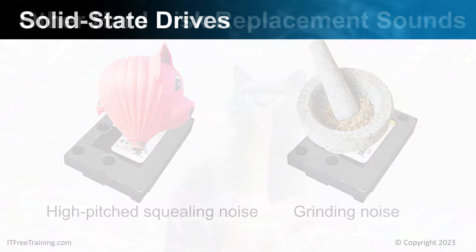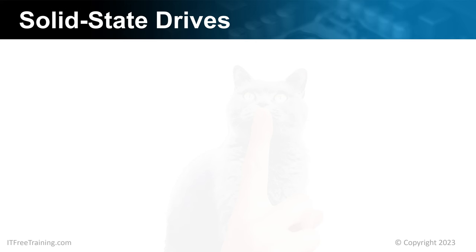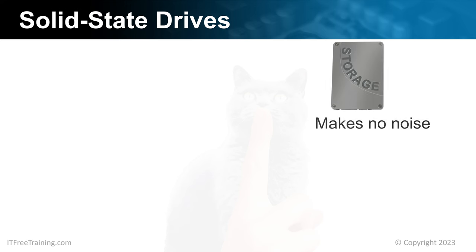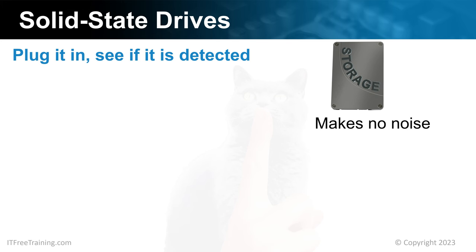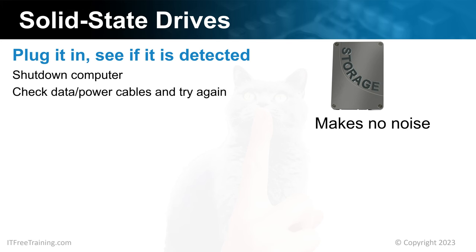Now I will look at solid state drives. Solid state drives are different from hard disk drives in that they make no noise, which makes it difficult to know that the drive is working or if there are problems with it. The simplest way to test a solid state drive is to simply plug it in and see if it is detected. If it is not detected, shut down the computer, check the cables, and try again. It is always best to shut the computer down, as sometimes hot plugging a storage device will not work. In some cases, you may want to use a USB docking station — if you do, make sure it is a good quality one.